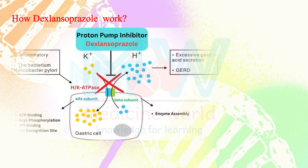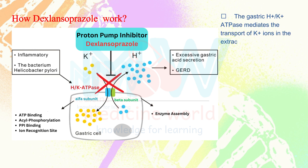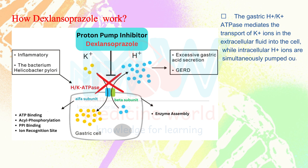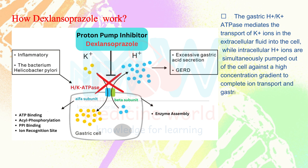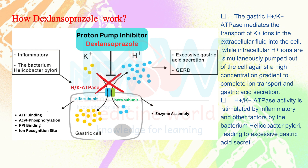Now we will discuss how a proton pump inhibitor inhibits hydrogen-potassium ATPase. The gastric hydrogen-potassium ATPase mediates the transport of potassium ions from the extracellular fluid into the cell, while intracellular hydrogen ions are simultaneously pumped out against a high-concentration gradient to complete ion transport and gastric acid secretion. Hydrogen-potassium ATPase activity is stimulated by inflammatory and other factors, including the bacterium Helicobacter pylori, leading to excessive gastric acid secretion and GERD. This is the mechanism targeted by PPI therapy.